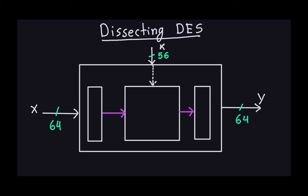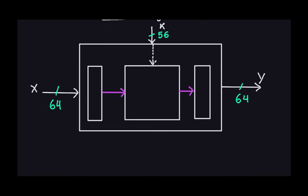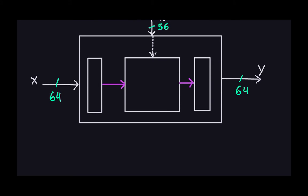The first part: when the plain text, or the block of 64 bits, comes in, the first thing that is done is this block here — and this block does a permutation to the plain text.